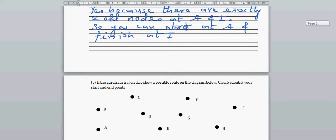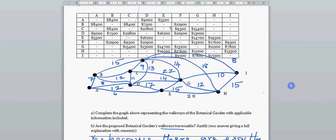So this network is done. We have answered question A and B. Now let's read question C. If the garden is traversable, show possible route on the diagram below. Clearly identify your start and end. So as this is a network with exactly two odd nodes, you can start at this point A. Either way, you can start at A and you would end at this point. Or you can also start at I and finish at A. To be traversable, you have to pass through each of the nodes or go to each of the nodes and not retrace any path.